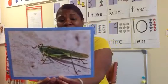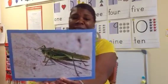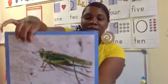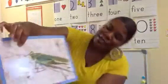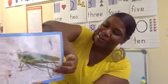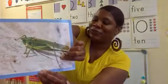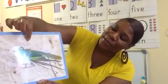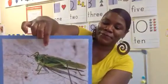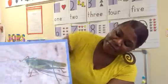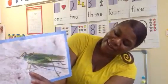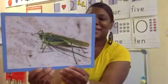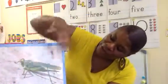Our vocabulary words for today are: antenna, which are right here; hind, which are his back legs right here, which are longer and stronger; insect, because this is the type of bug that he is; his legs, which are right here in the front and also in the back; and his beautiful wings, which are right here.